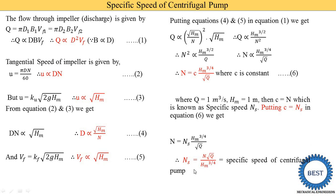This equation is similar to the specific speed of a turbine: Ns = N√P / H^(5/4). In the turbine equation, P (power) appears because turbines generate power, while in the pump equation Q (flow rate) appears because pumps deliver water. Also, the power of H is 5/4 for a turbine and 3/4 for a pump.